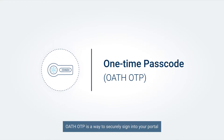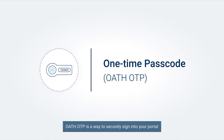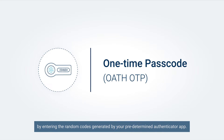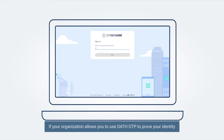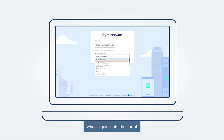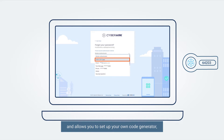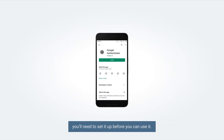OATH OTP is a way to securely sign into your portal by entering the random codes generated by your predetermined authenticator app. If your organization allows you to use OATH OTP to prove your identity when signing into the portal and allows you to set up your own code generator, you will need to set it up before you can use it.